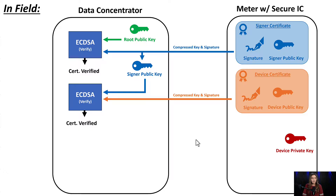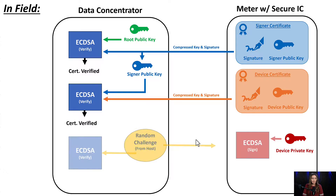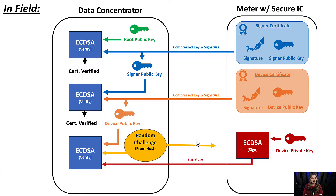We'll hash it with the device certificate to verify that the signer private key signed the device certificate. The data concentrator will then send a random number challenge to the meter, and the meter will sign it with its device private key and send it back. Finally, the data concentrator will take the device public key, the random number challenge, and the signature, and run it through an ECDSA verify function to confirm that the JSON message is authenticated and has not been altered from its original form.